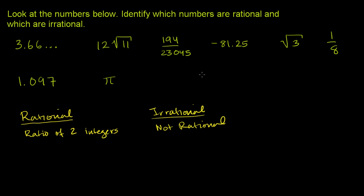So there's some low-hanging fruit here, because some of these numbers are actually represented as the ratio of two integers. 194 is an integer, 23,045 an integer. Clearly the ratio of two integers, this fraction right over here. So it is rational. 1 is an integer, 8 is an integer. Clearly the ratio of two integers. So this is rational as well.